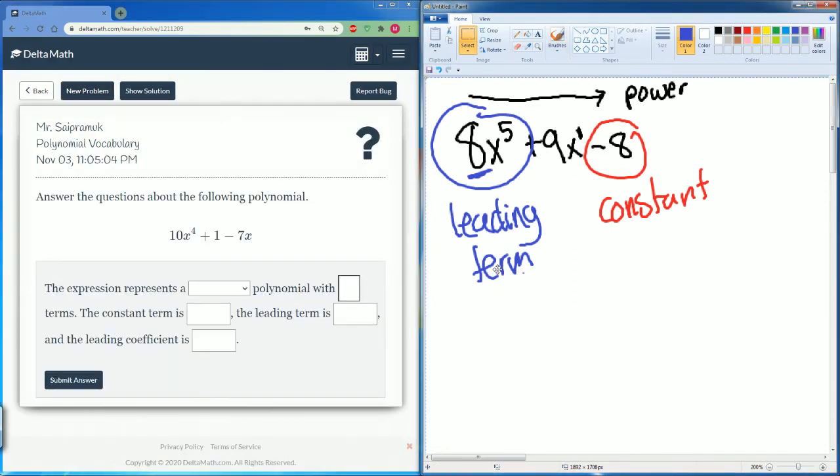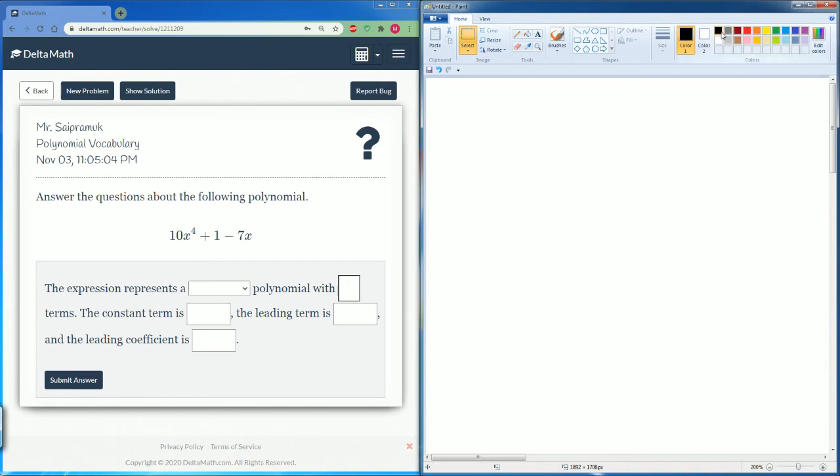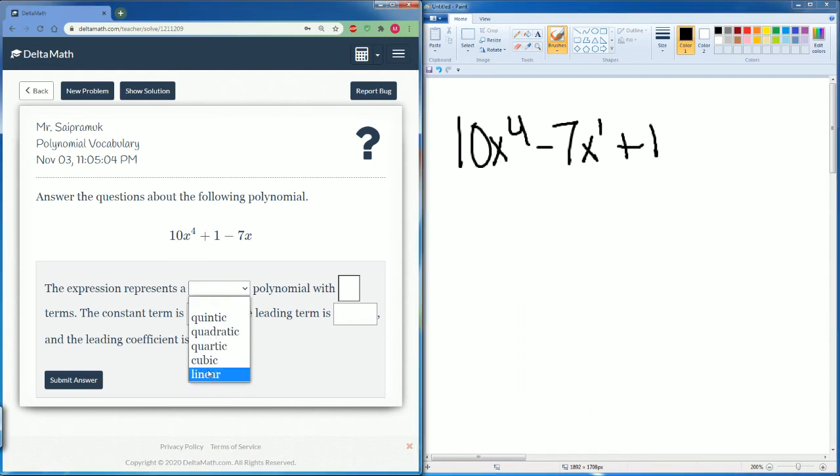Same thing here. Make sure you write this in standard form. So it is 10x to the fourth, minus 7x to the power of 1, plus 1. This is in standard form. This has, it goes to the fourth power.